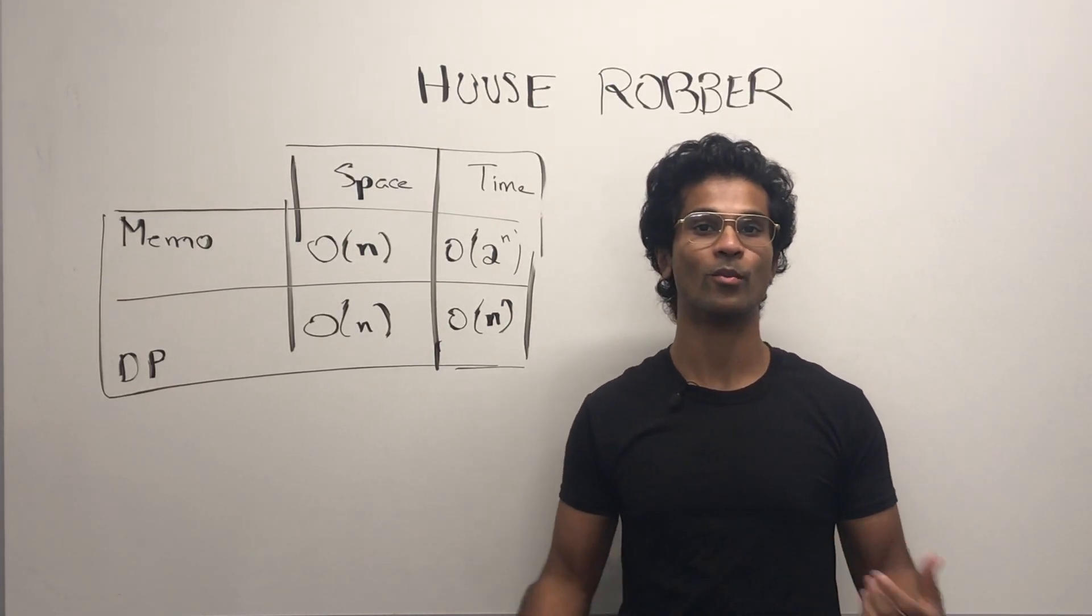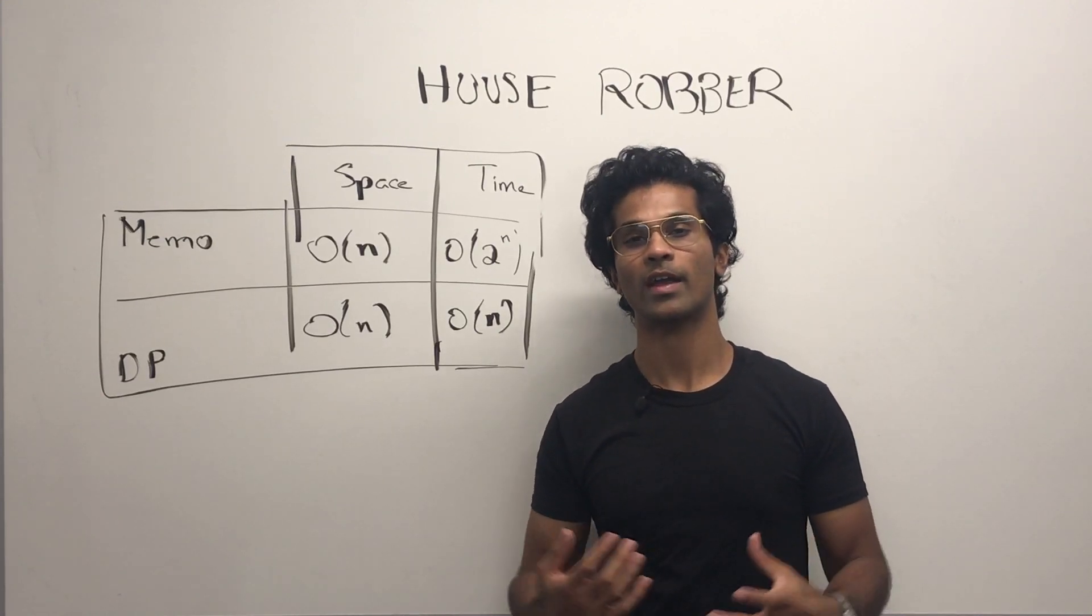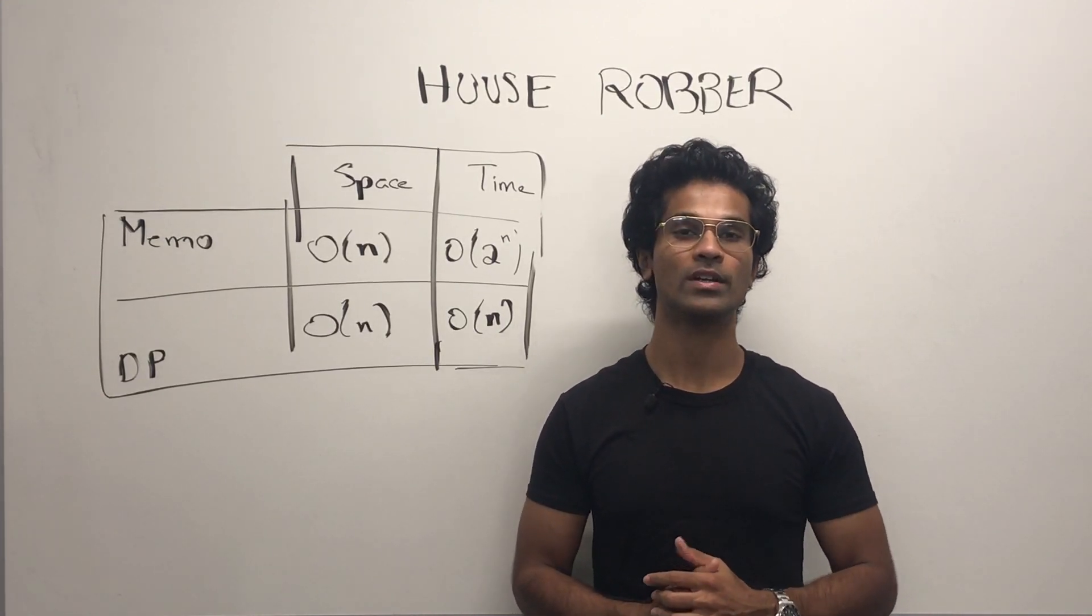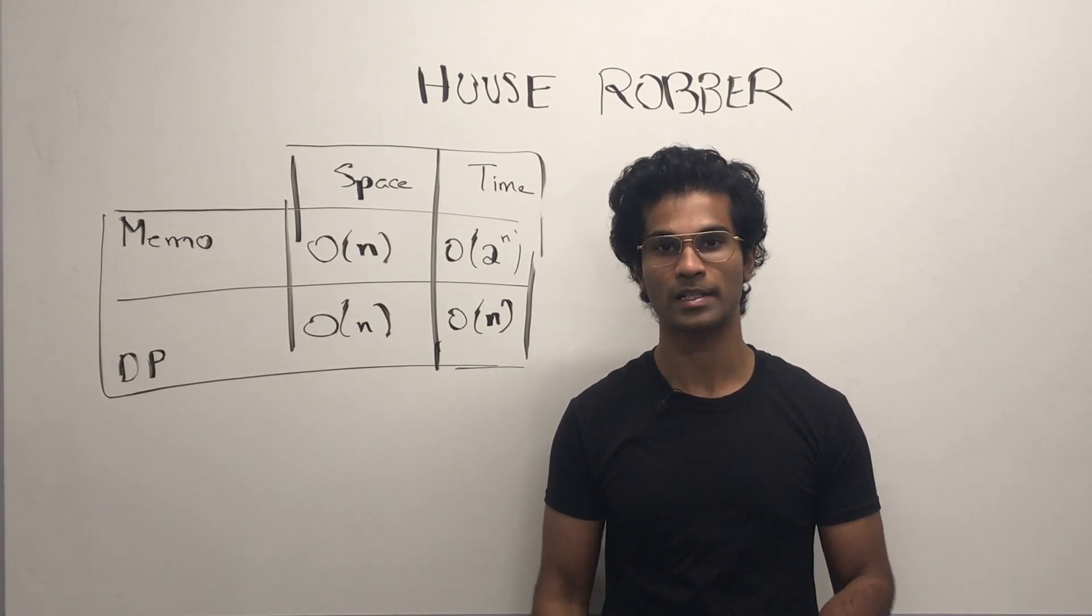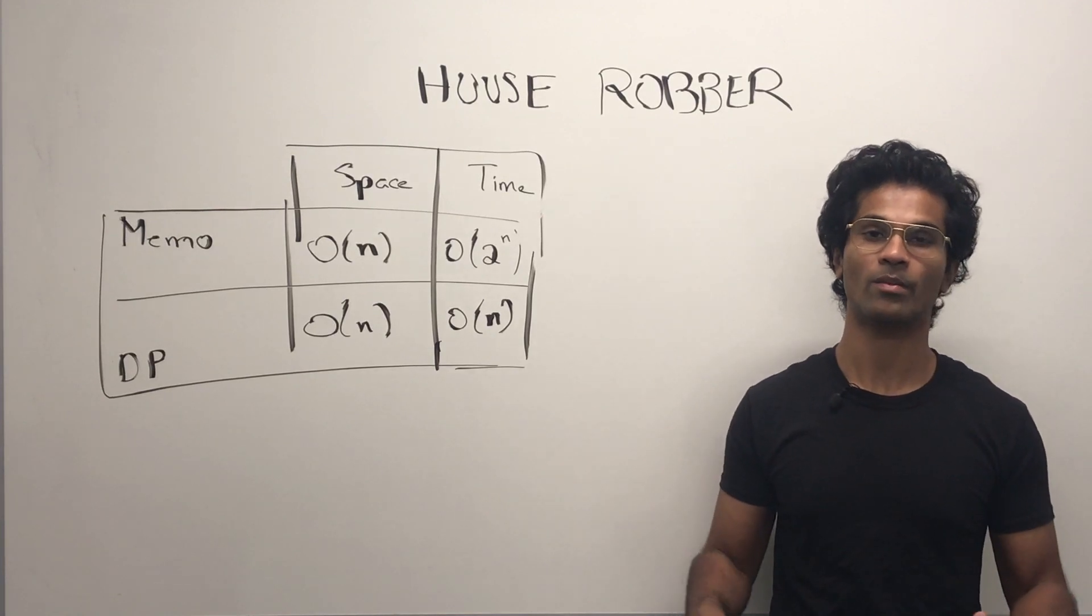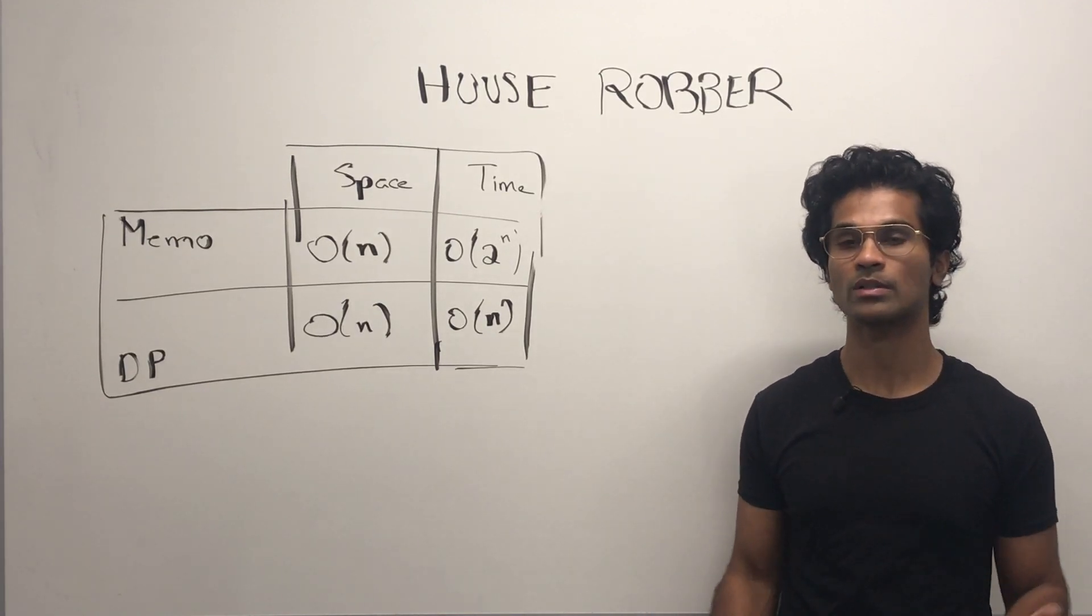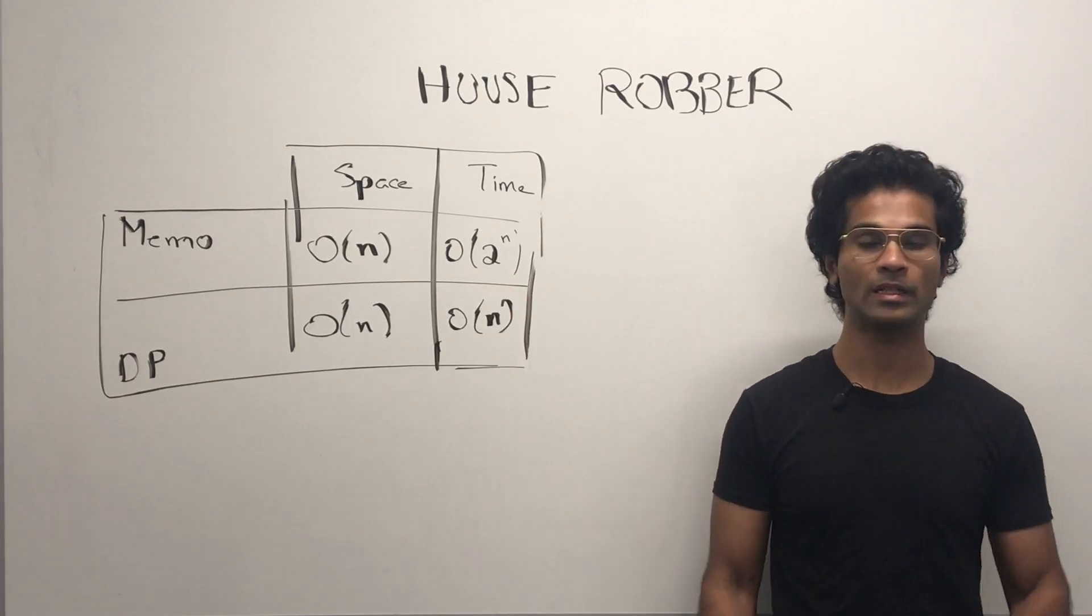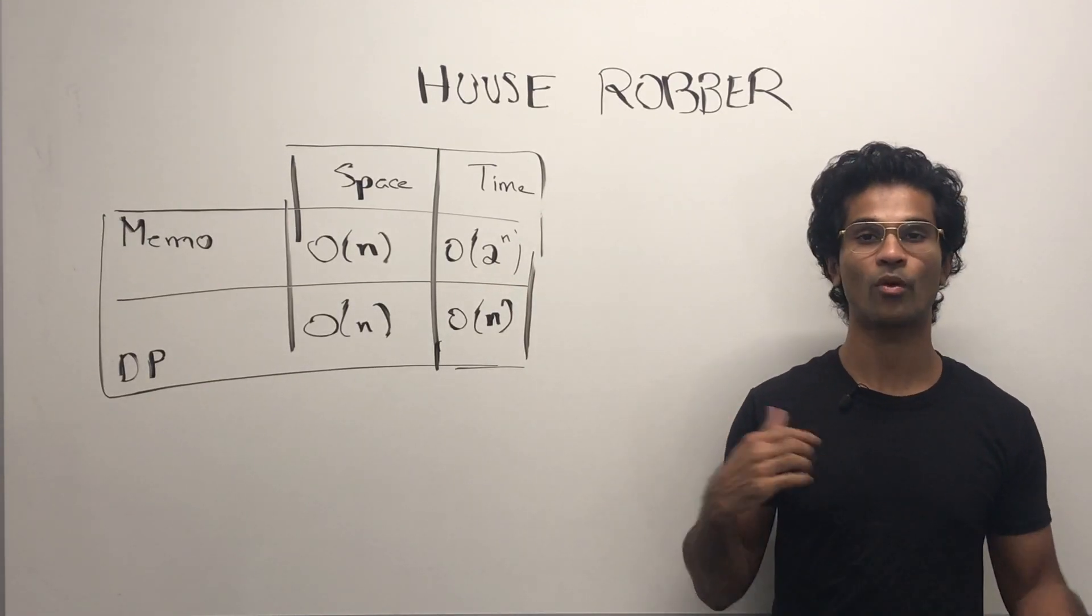The space complexity of the memoization approach, our cache could grow to a size of n. And for the time complexity, in the worst case, 2 power n, if for some reason we have a bunch of cache misses. We won't, but that's theoretical, because each dp call is making two more dp calls.